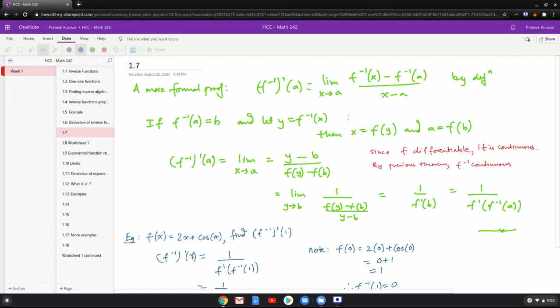A more formal proof would be to use the definition of derivative. Finding derivative is finding this particular limit, which if you recall is the slope of the secant line which then becomes the tangent line under the limit. So limit x going to a of f inverse of x minus f inverse of a over x minus a.